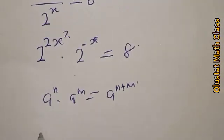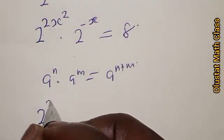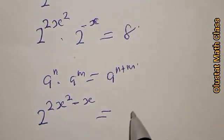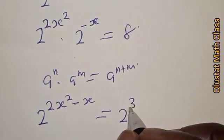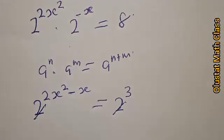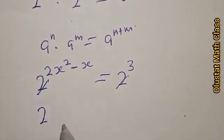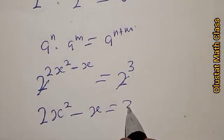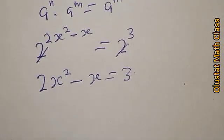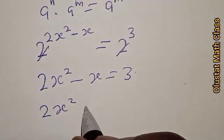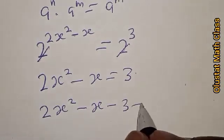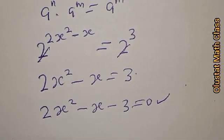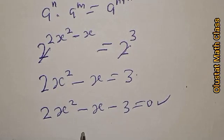Therefore, the equation becomes 2 raised to power 2s squared minus s equal to 2 raised to power 3. Since they have the same base, the bases cancel, and we are left with 2s squared minus s equal to 3. Then let's equate everything to 0: we have 2s squared minus s minus 3 equal to 0. This is a quadratic equation and we are going to solve it using the factorization method and the quadratic general formula.